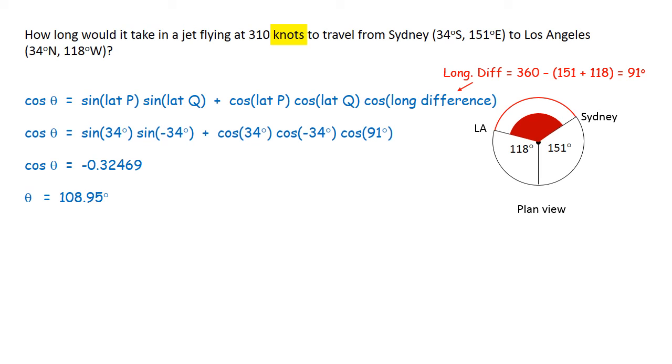We want the distance in nautical miles, so we're going to use D equals 60θ. θ equals 108.95 degrees. We can find the distance but we were asked to find the travel time.